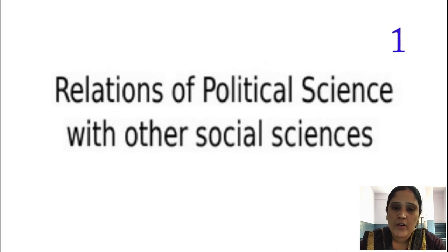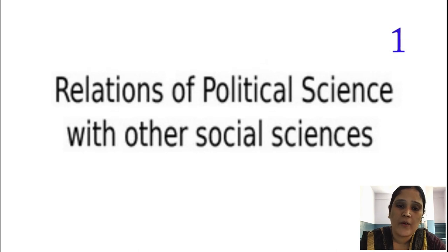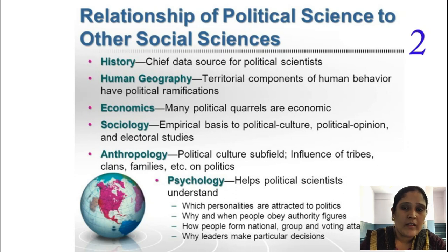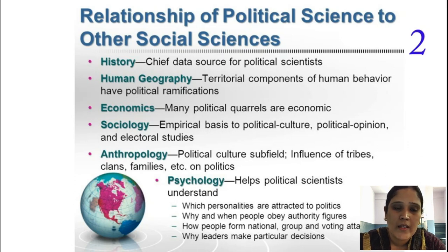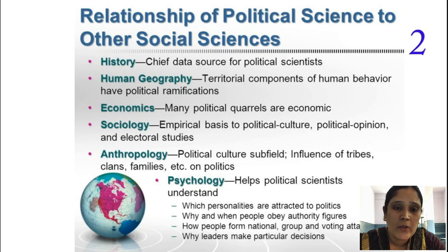Knowledge can be classified into three types: physical science, biological science, and social sciences. Social science depends on studies about the state and society — how they came into existence, what type of cultural values and development were there in the past. The social sciences include sociology, anthropology, and human geography — that is, how the territorial components of human behavior determine authority and what type of political ramification is there in society.